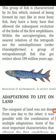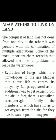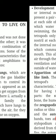The conquest of the land was not done from one day to the other. It was possible with the combination of multiple adaptations. Some of the most important characteristics that allowed the first amphibians to leave the water were the evolution of the lungs, which were homologous to the gas bladder that allowed fish to control its buoyancy. Lungs appeared as an additional way to get oxygen from the air. In fact, there is a Sarcopterygian family whose members have lungs to get oxygen from the air even though they live in water that is low in oxygen.